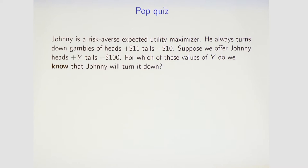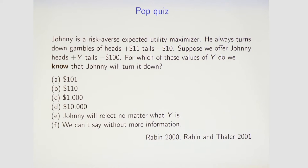Here's a pop quiz. Johnny is a risk-averse expected utility maximizer — he always turns down gambles that are heads +$11, tails -$10. We're going to offer Johnny a gamble of heads +y, tails -$100. For which values of y do we know, based just on this information, that Johnny will turn down the gamble? The options are $101, $110, $1,000, $10,000, Johnny will reject no matter what y is, or we can't say without more information.